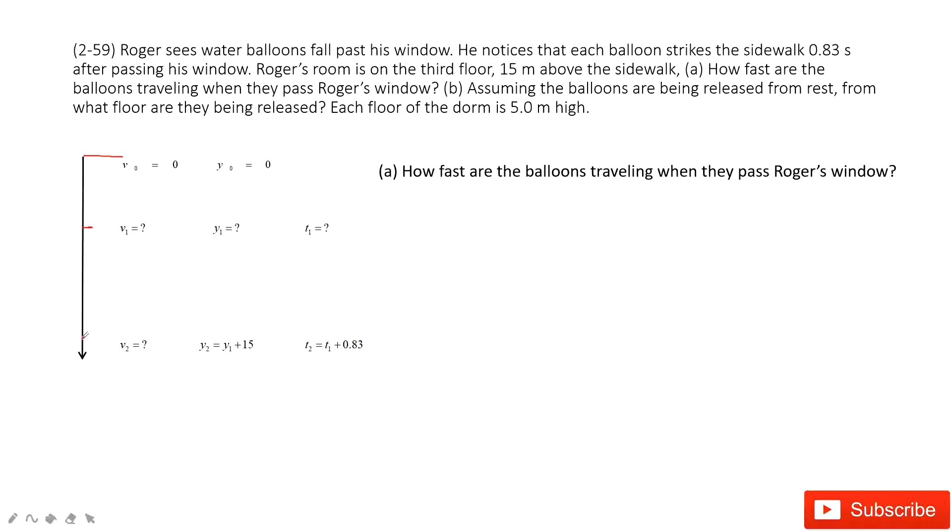And then this is the sidewalk. When these balls hit the ground, the velocity is V2. The position Y2 is 15 meters above the sidewalk. The window is 15 meters above the sidewalk, so Y2 should be Y1 plus 15 meters. He noticed that each ball hit the sidewalk 0.83 seconds after passing his window, so T2 is T1 plus 0.83. Do you agree?